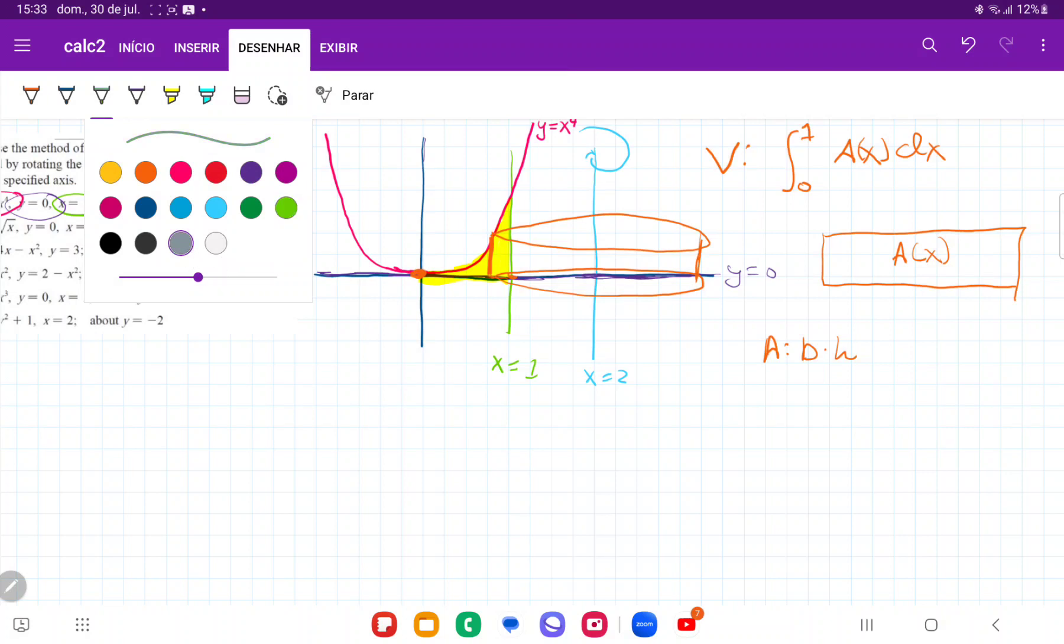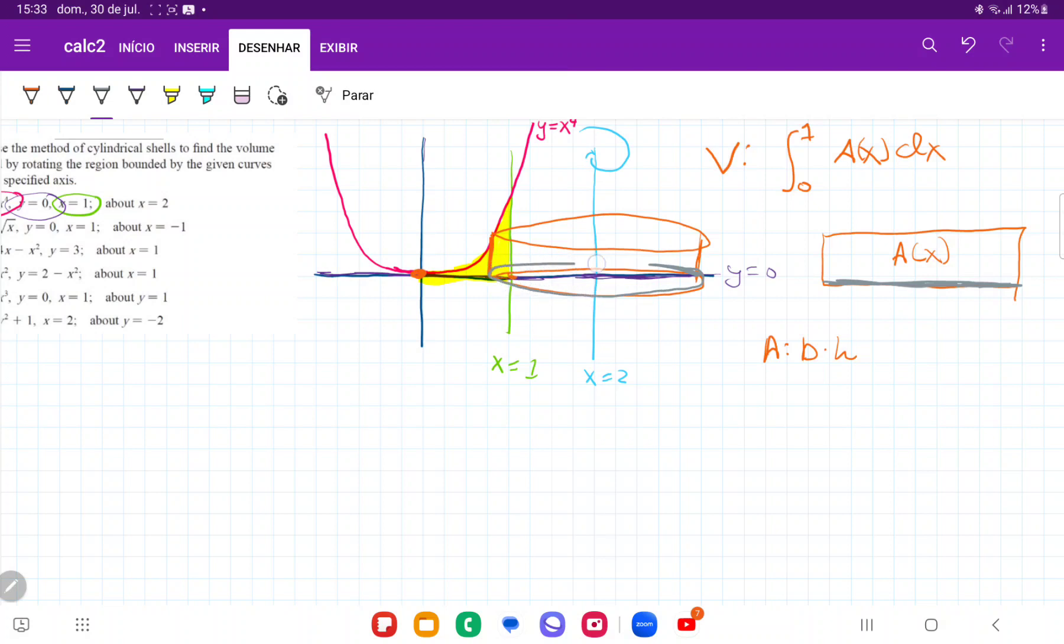Well, the base here, let me do it in a different color. This base right here is just this circumference of my circle. And now the circumference of any circle, the circumference is given by 2 pi r. And let's think about what this radius is.